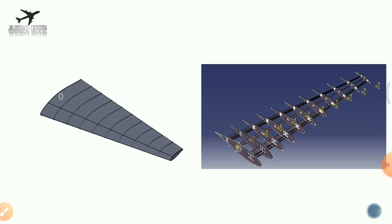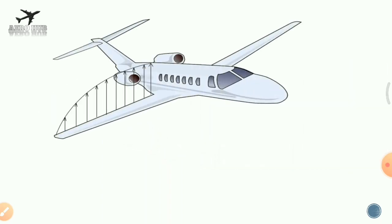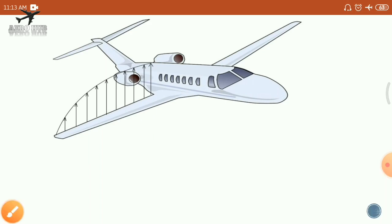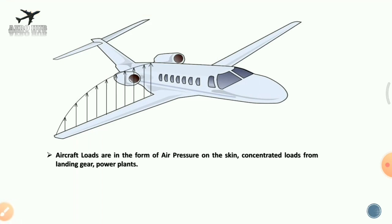In this lecture, we will discuss how load is transferred in the wing. As you can see in this figure, we have an aircraft flying at a particular altitude with an elliptical lift distribution over the wing. In addition, there are concentrated loads mainly from the landing gear and the power plant. Air loads are in the form of air pressure — a distribution of pressure throughout the surface of the wing.